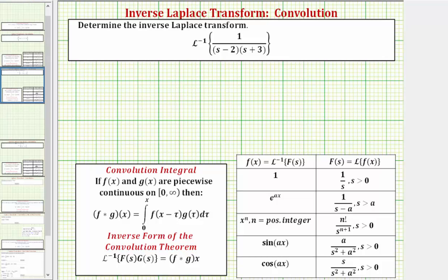Notice how we can think of this fraction as a product of two fractions, where F(S) is equal to one divided by the quantity S minus two, and G(S) is equal to one divided by the quantity S plus three.